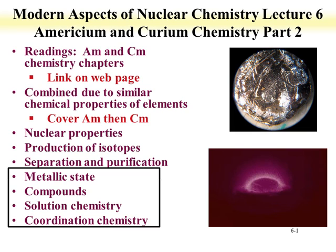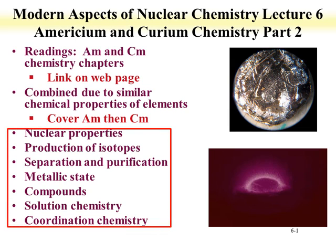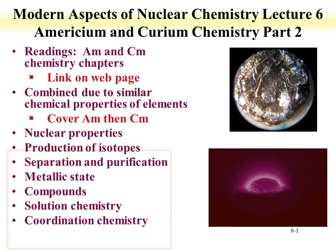Then we will move on to curium nuclear properties, production of curium isotopes, separation and purification, and then metallic state, compounds, solution chemistry, and coordination chemistry of curium. When we start talking about the coordination chemistry of curium, we'll certainly have a decrease in the number of compounds we can discuss.